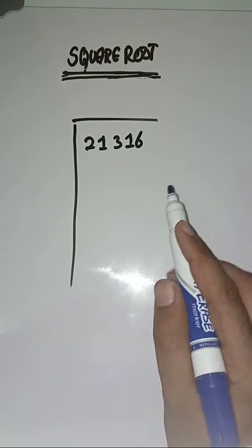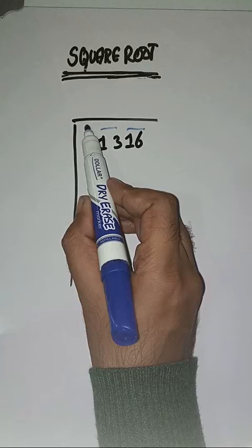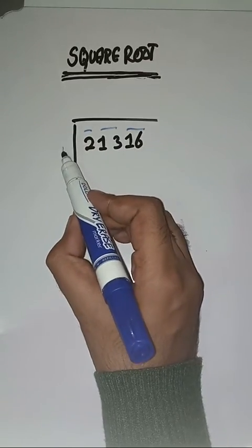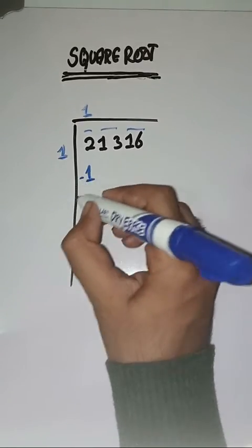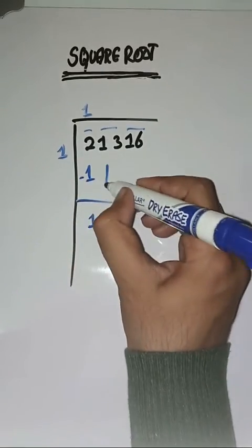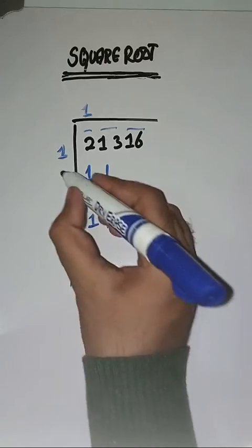make pairs from right to left like this. So we will start with one. One minus one gives us 1. Next pair is 13, we will bring it down. Here also we will do